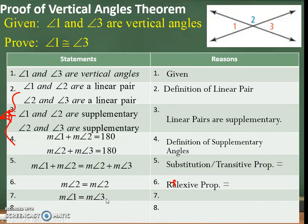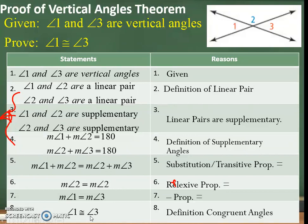Lastly, that means angle 1 and angle 3 are equal to each other. That is the subtraction property of equality. And the last step: angle 1 and angle 3 are congruent, which is what we needed to prove. The reason is definition of congruent angles. So we proved that vertical angles are congruent.